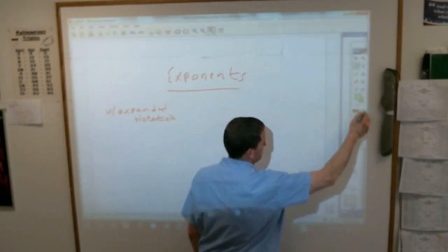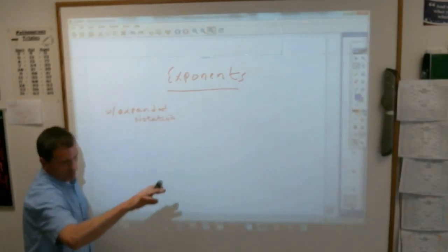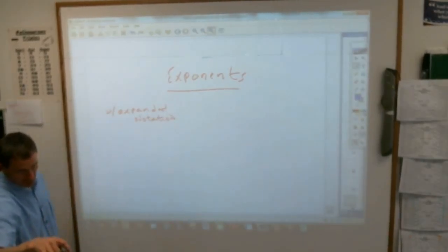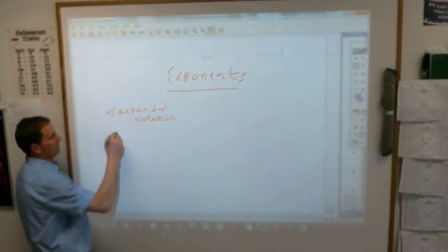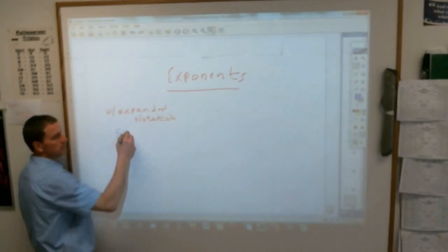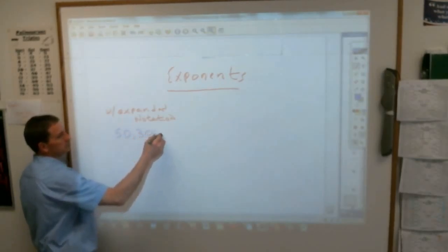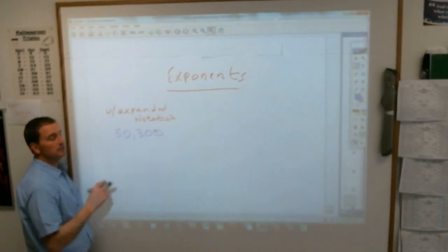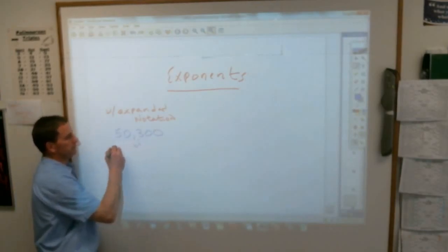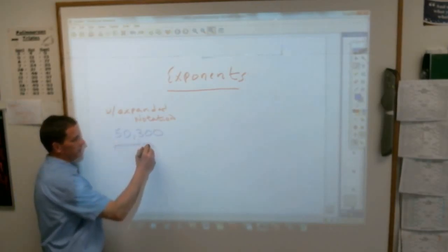Does anybody remember expanded notation? What is expanded notation? Jill? If you had like 2,090, you'd put 2 times 1,000. Or it was like 2,053. Perfect. Yeah, I didn't get it just there.